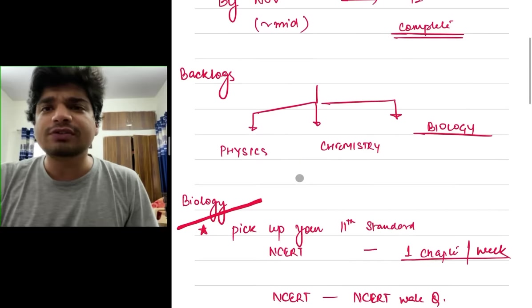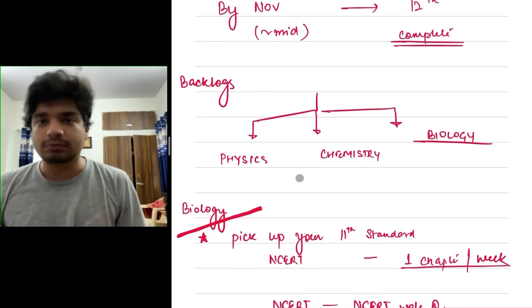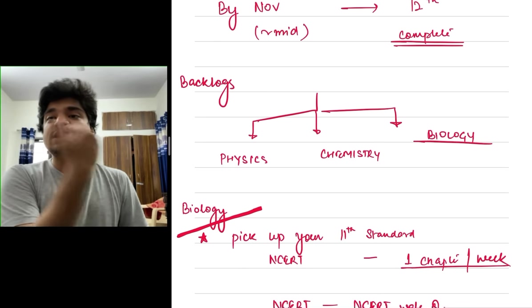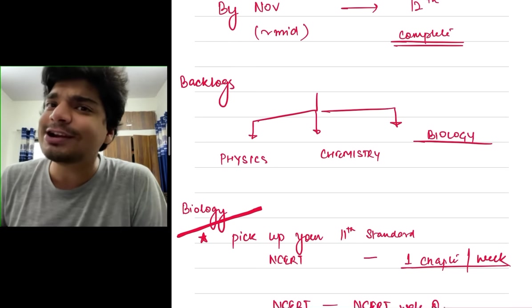Now let's get back to the fact that you have not started in 11th standard and we'll divide the backlogs into three different subjects basically. Biology, Chemistry and Physics. What is the easiest one? Biology. Why? Because you know that you only have to do NCERT.